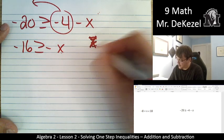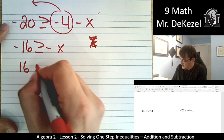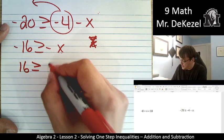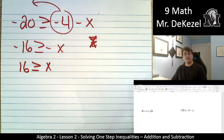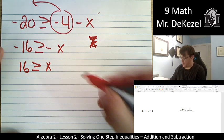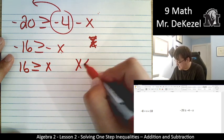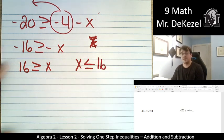Sorry, let's rewrite that. 16 ≥ x. And now we're going to flip it over so that x is on the left. x ≤ 16.